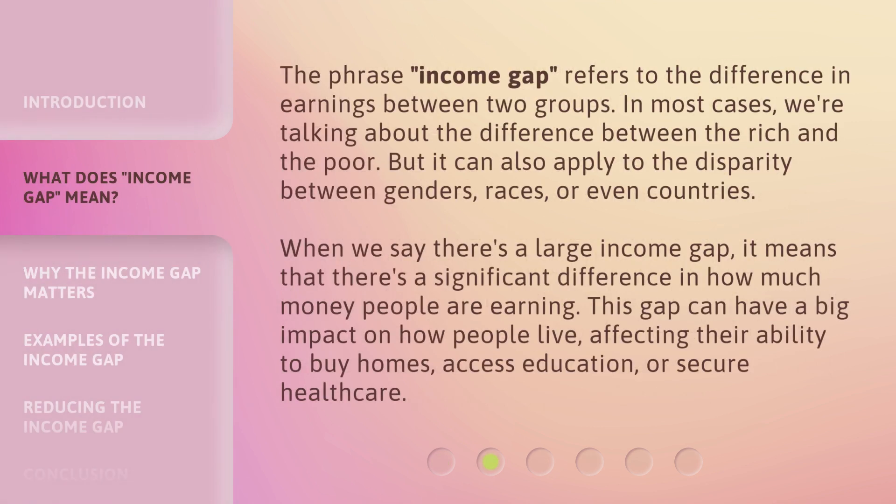The phrase 'income gap' refers to the difference in earnings between two groups. In most cases, we're talking about the difference between the rich and the poor, but it can also apply to the disparity between genders, races, or even countries. When we say there's a large income gap, it means that there's a significant difference in how much money people are earning.